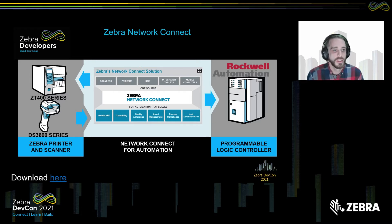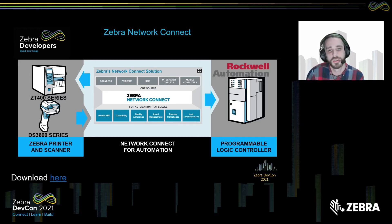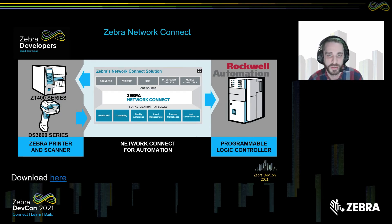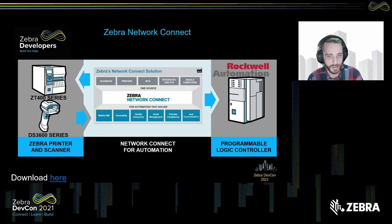Moving into our enterprise solutions, we have Zebra Network Connect. It is a seamless way to connect rugged Zebra scanners and printers to the most widely used industrial Ethernet protocols and other standard networks without additional conversion hardware. Let's take a closer look at what that means.